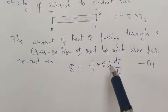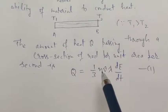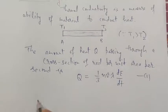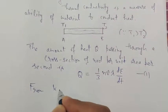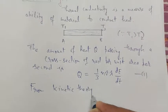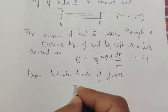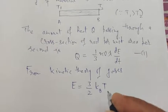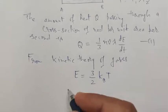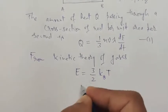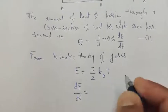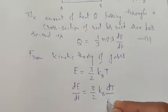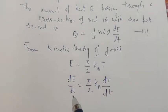From the kinetic theory of gases, the energy is E = (3/2) K_B T, where K_B is Boltzmann's constant and T is the absolute temperature. This is the law of equipartition of energy. Differentiating, dE/dT = (3/2) K_B, and we substitute this into equation 1.